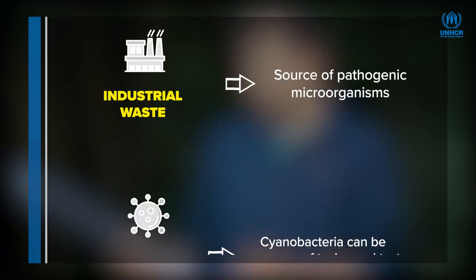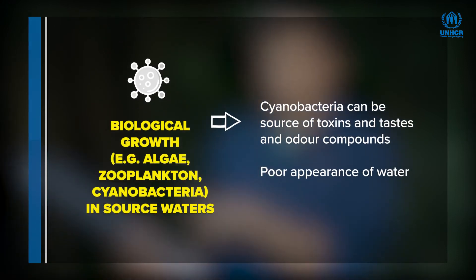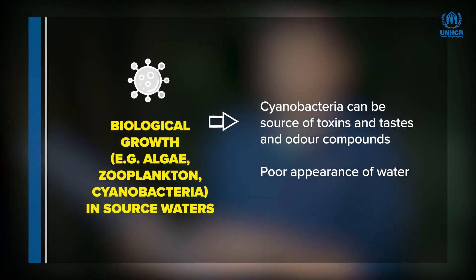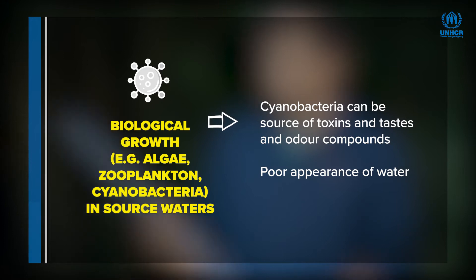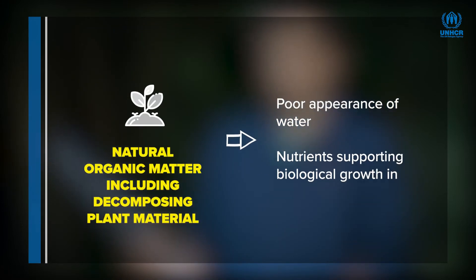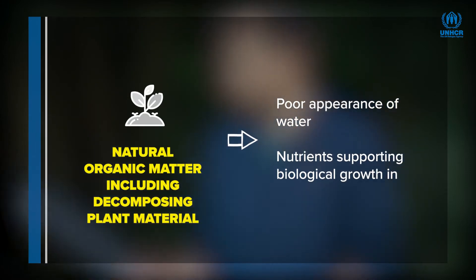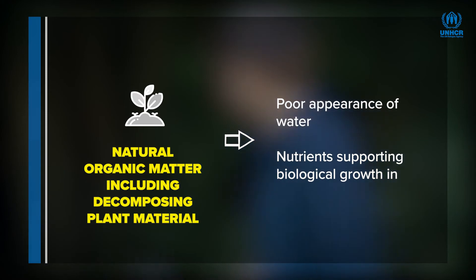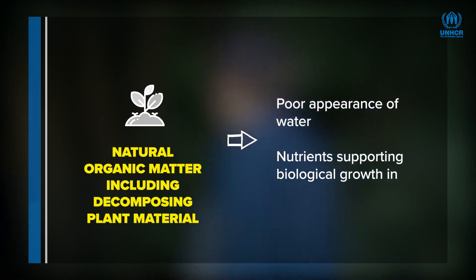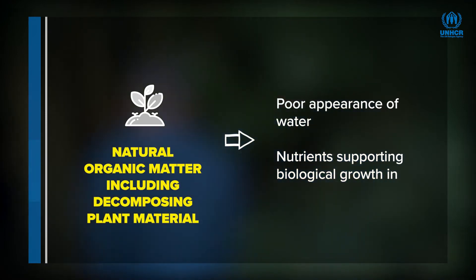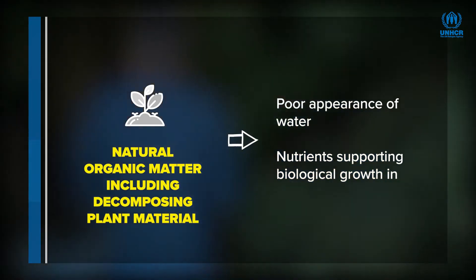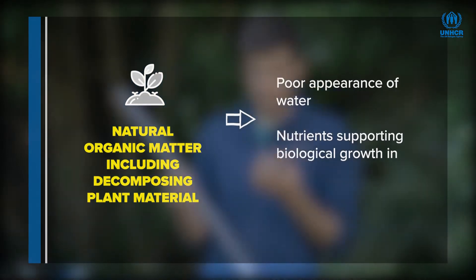Elevated turbidity in source waters can signal pollution events in the catchment, such as heavy rain or contamination spills, and can challenge the effectiveness of water treatment techniques such as coagulation and clarification, filtration, and disinfection.